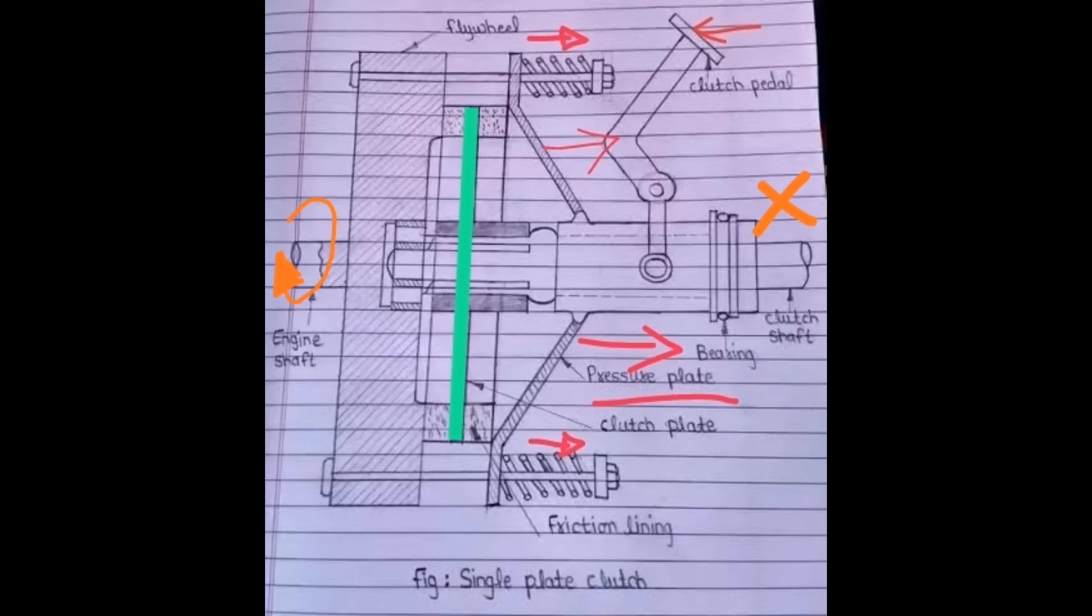Generally in this type of clutch, six springs are provided to apply axial pressure on the clutch plate and the friction plate.